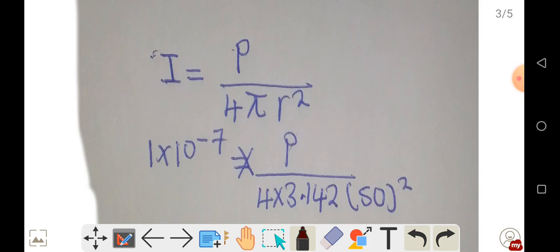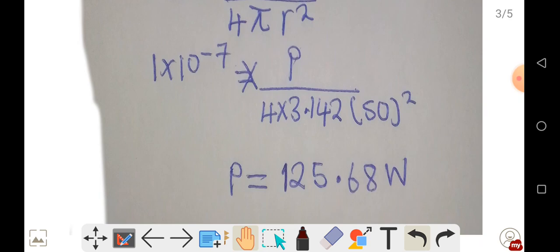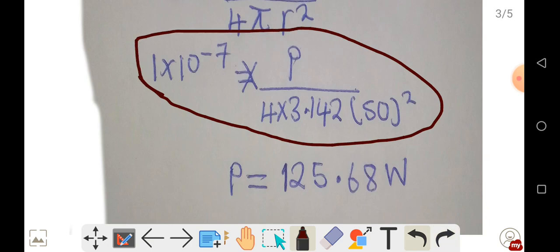The intensity we found was 1.0 times 10 to the power negative 7, which we have substituted here. Power is what we want to find. We substitute the pi value, which is 3.142. The radius is 50, which we have written here. When you solve this mathematically...